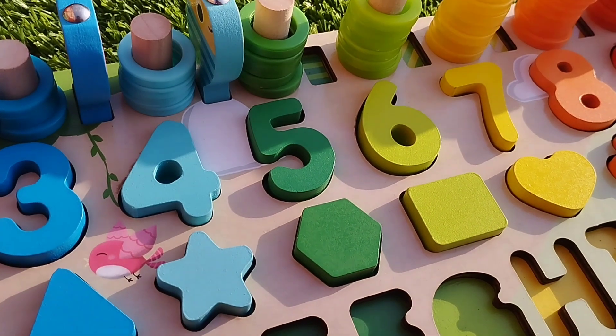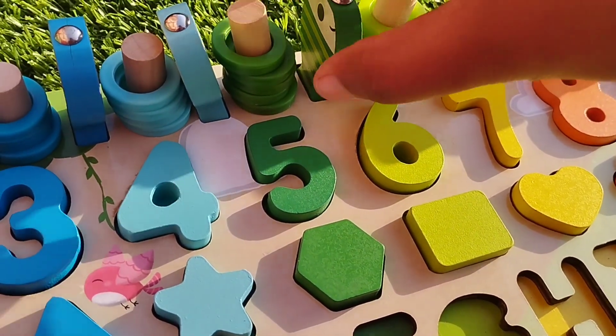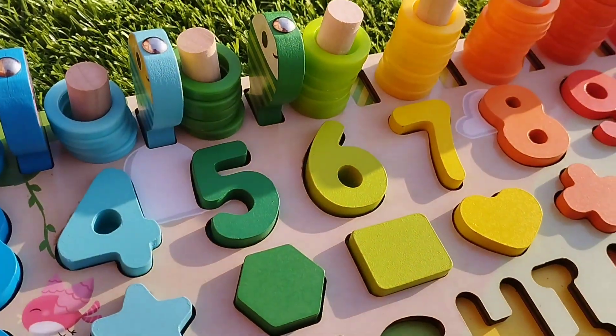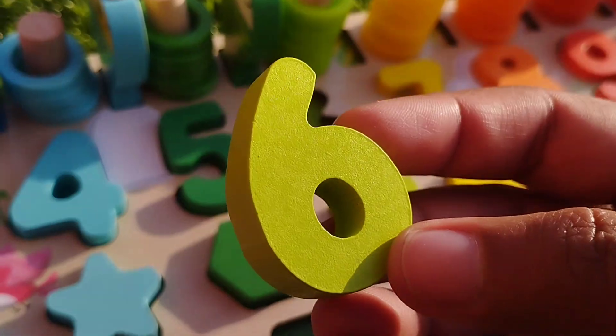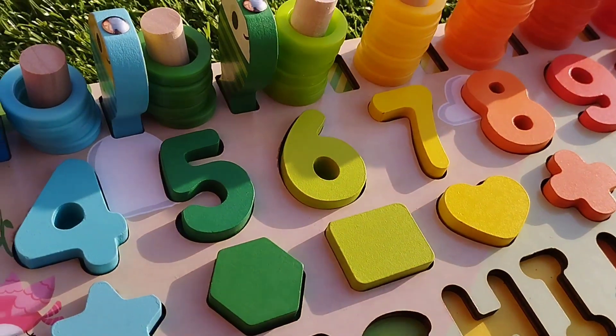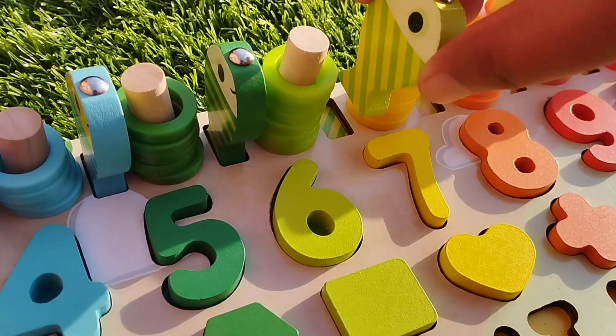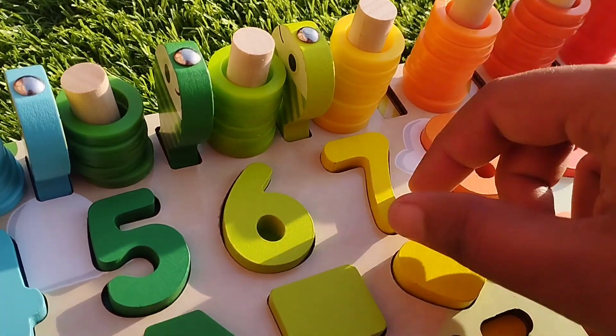Five is green. Let's find the green fish. The next number is six. Number six is parrot. This is parrot fish.